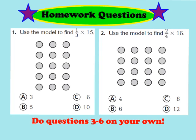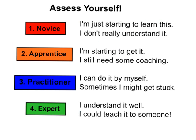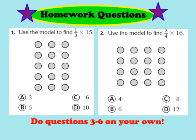Now as your homework for tonight, I want you to complete question number 1 and question number 2, as well as numbers 3 through 6 found in your GoMath workbook on page 146. Don't forget, somewhere on your homework page I want you to assess yourself: do you feel like you're number 1 a novice, number 2 an apprentice, number 3 a practitioner, or number 4 an expert? Your homework is questions 1, 2, and 3 through 6 on page 146. We hope you have a great evening and look forward to seeing you in school tomorrow.